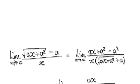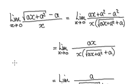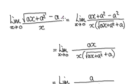OK, so to do this, you don't always have to use L'Hôpital's rule. You can times top and bottom here by the conjugate of this. So multiply top and bottom.